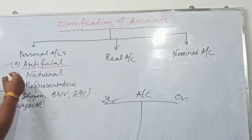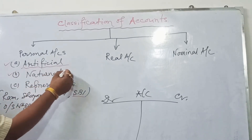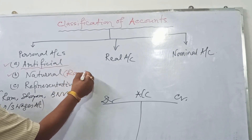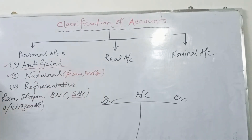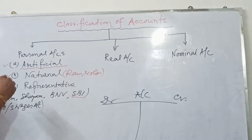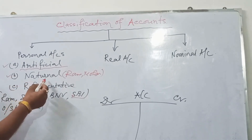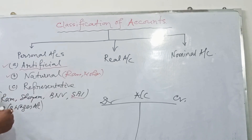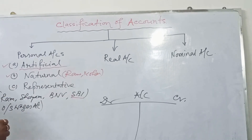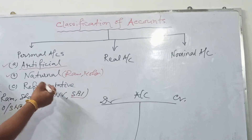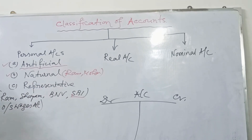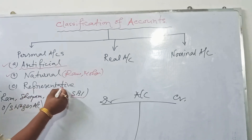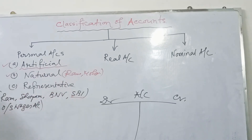Next, natural persons mean human beings — say Ram, Mohan. They have physical form and signature. That is known as natural person. Representative personal accounts are those where some expenses are outstanding or prepaid. Wages outstanding, salary outstanding, and rent outstanding are examples of representative personal accounts.